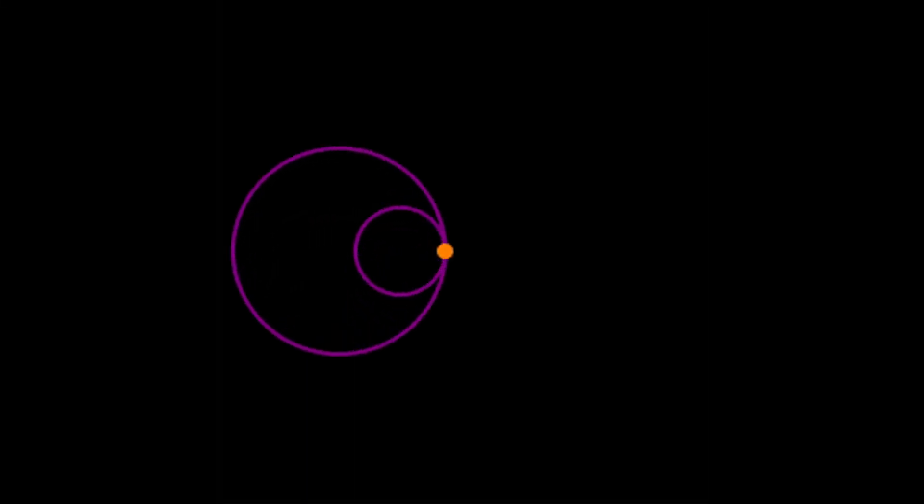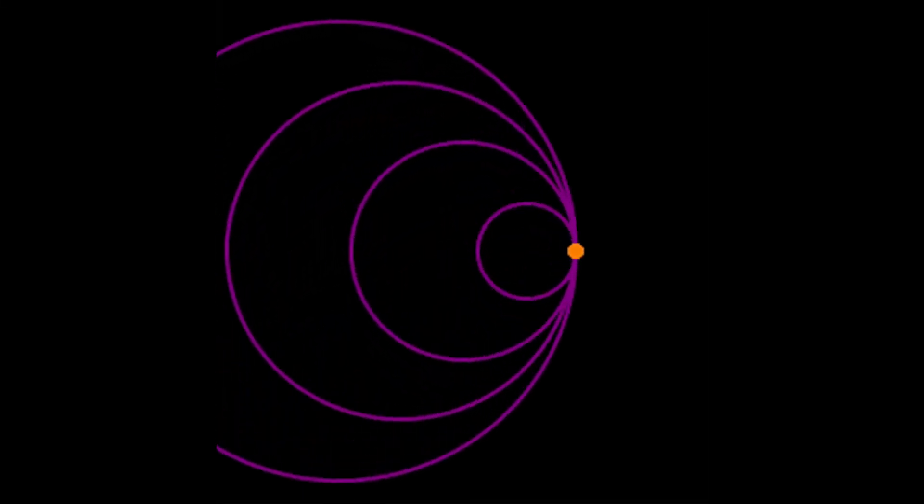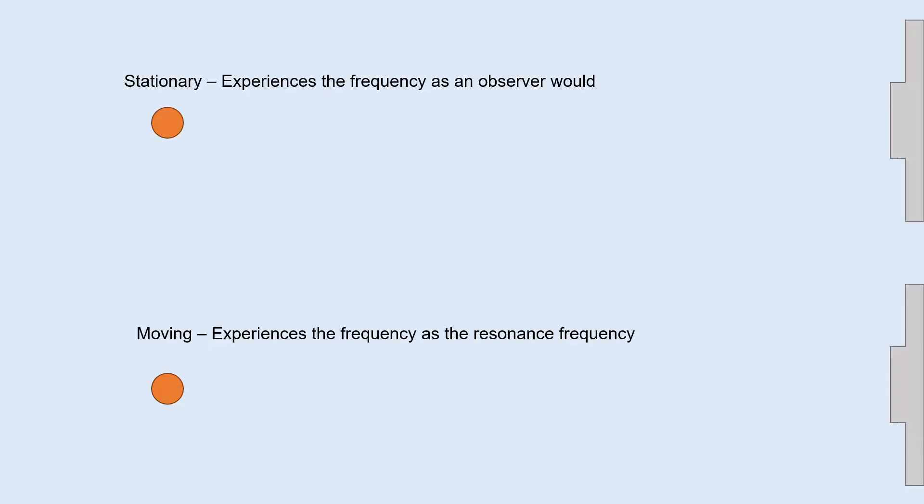As a result of the Doppler effect, when the atoms are moving towards an incident laser beam, from their frame of reference, the frequency is perceived to be slightly greater than what an observer would see. Therefore, only atoms moving in the direction of a laser beam will experience it as the resonance frequency, go through a fluorescence cycle and have their velocity impacted by the laser.